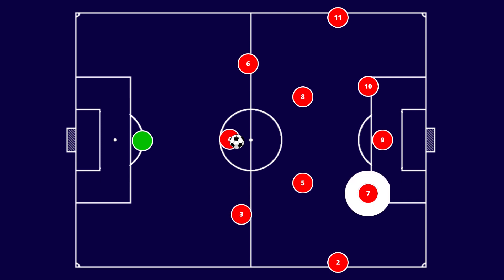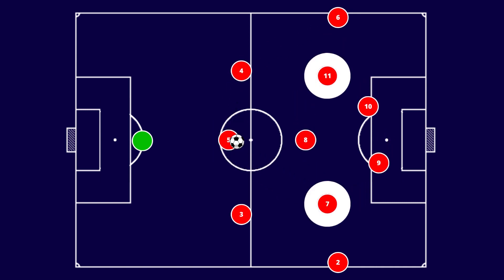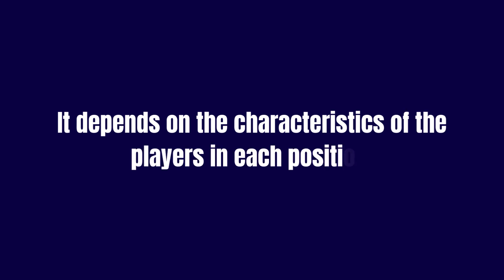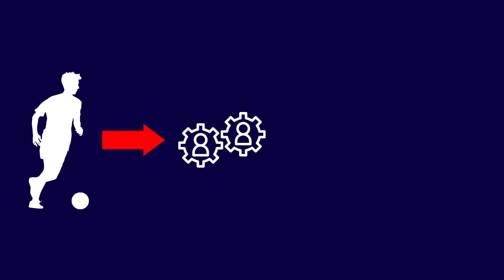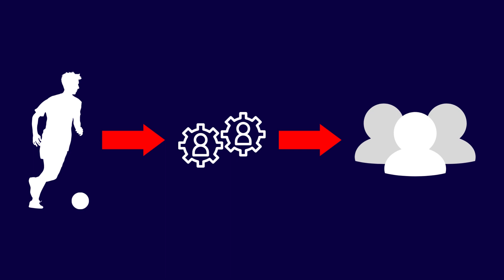The winger on the side the full-back moves forward can come inside, while the other stays wide. If the wingers are more central playmakers, one of the central midfielders can drop into the defensive line, while the wingers form a trio of attacking midfielders with the other central midfielder, and the full-backs provide width. These are some of the many possibilities when using the 4-4-2 formation, as it highly depends on the characteristics of the players in each position, which can greatly impact a team's dynamics even within the same tactical system.